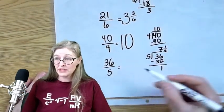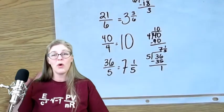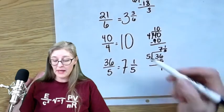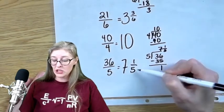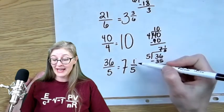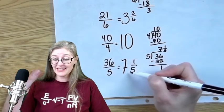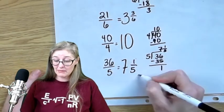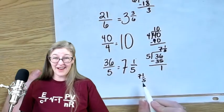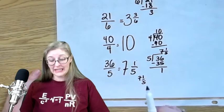You'll notice that I always write the whole numbers nice and big so that the fractions will all line up side by side, and that way I can tell what's a fraction and what's a whole number. If your handwriting gets a little sloppy, it's sometimes hard to tell if maybe you meant 71-fifths. So make sure that you're writing neatly and clearly.